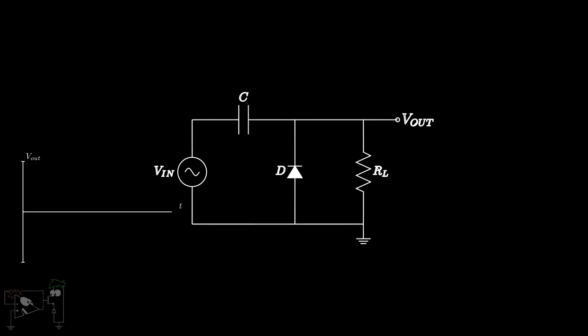Suppose we feed a sinusoidal input with a maximum voltage of Vmax to the positive clamper. Then we will get a sine wave shifted upwards by Vmax in the output. However, this is assuming the diode is ideal. If we consider a practical diode, then the waveform will shift down by the threshold voltage of the diode.